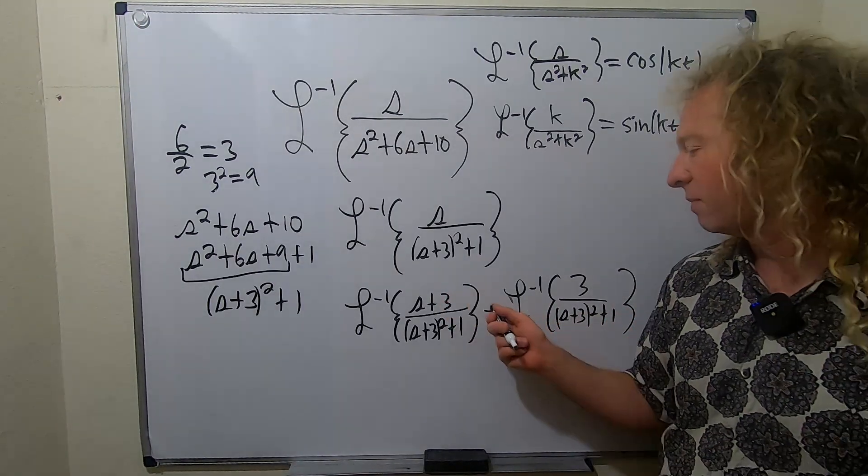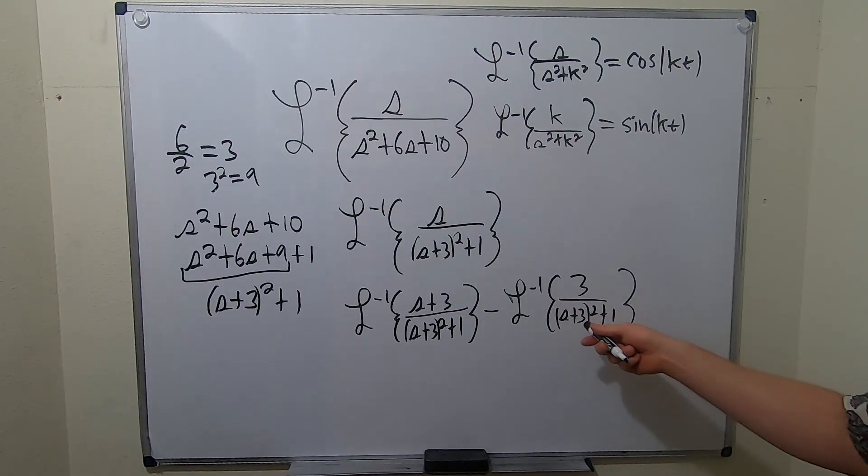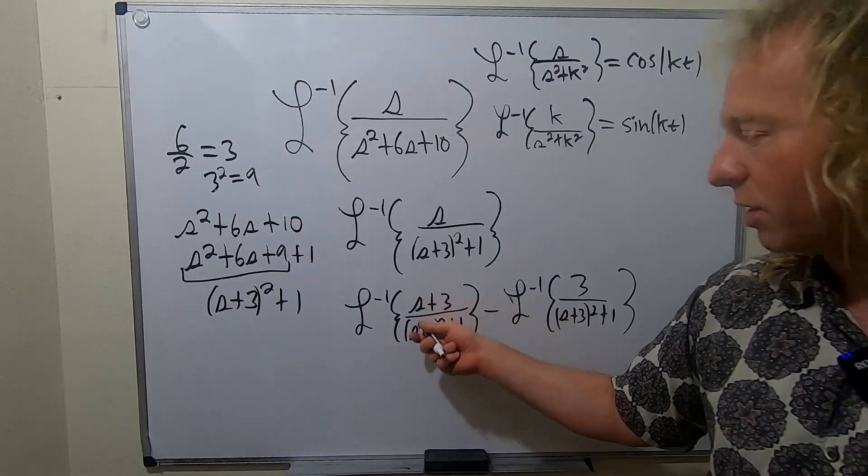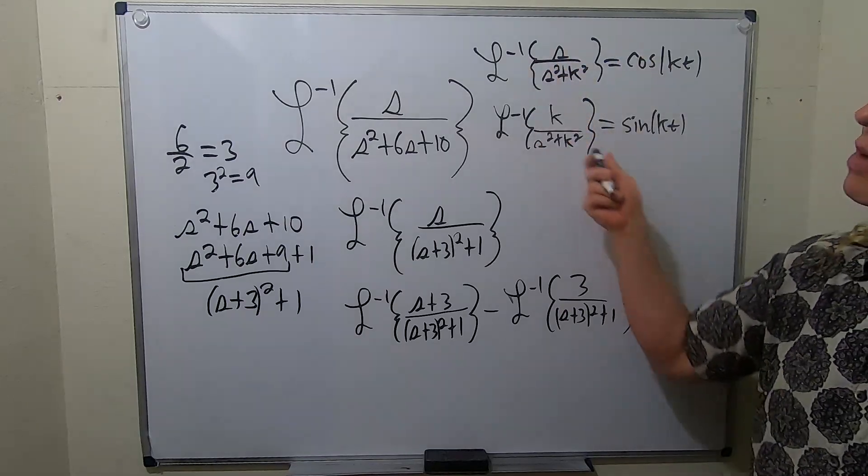Right? Because 3 minus 3 is 0. So it's just some basic math. So now we're going to do two shifts. We'll do a shift here, and we'll do a shift here. Because we want to make these both s's, and we want to make this an s, so we can apply these formulas.